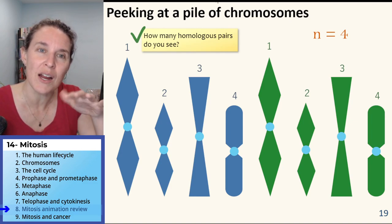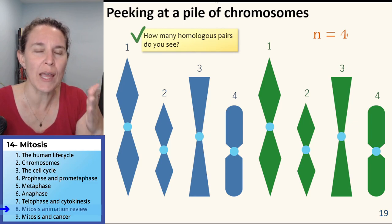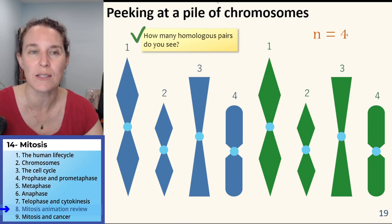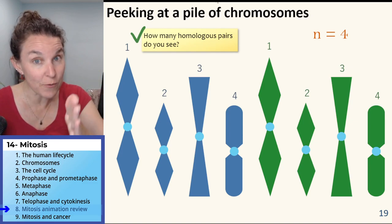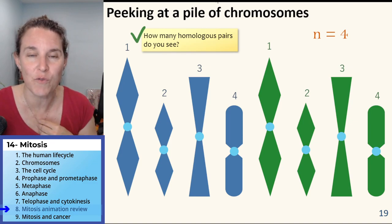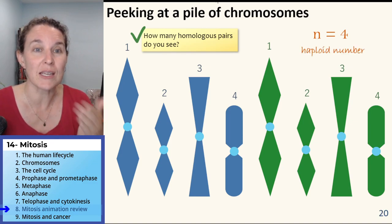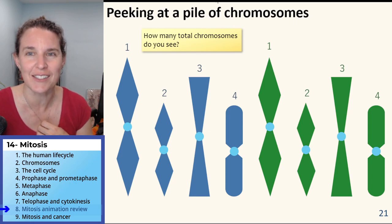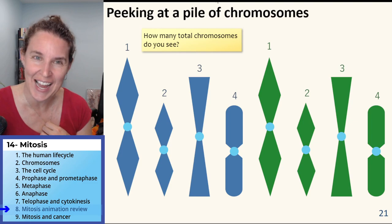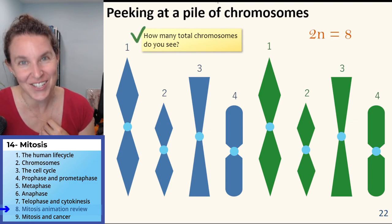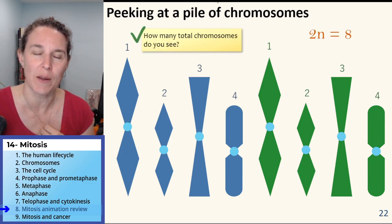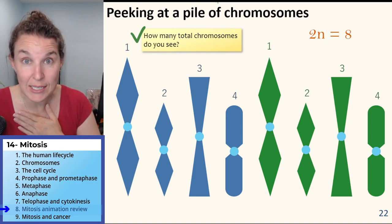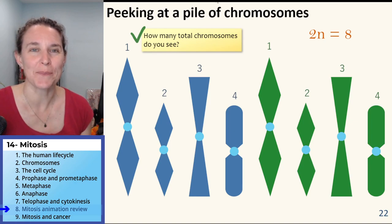When this is our haploid number, N represents the number of chromosomes, the number of different chromosomes found in this organism. This organism has four different chromosomes. So the haploid number is four. The diploid number is going to be eight because there's actually a total of eight chromosomes there. What is our diploid number? 46. What is our haploid number? 23.